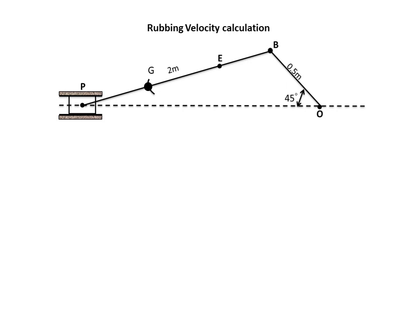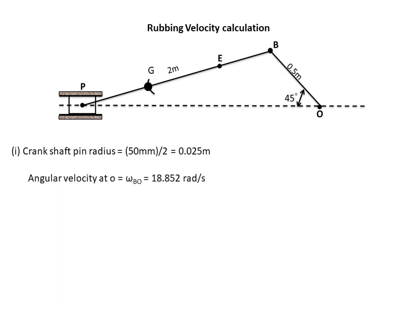The last question is rubbing velocity — the easy part. You must understand the direction and sense of rotation of each link. For the crankshaft pin at O: the crank rotates at 18.852 rad/s; there is only one angular velocity since point O is fixed. Pin diameter is 50 mm, radius is 0.025 m. Rubbing velocity = angular velocity × pin radius = 18.852 × 0.025 = 0.47 m/s. For the crank pin at B: diameter is 60 mm, radius is 0.03 m. Here the crank and connecting rod rotate in opposite senses, so add their angular velocities: 18.852 + 3.4 = 22.252 rad/s. Rubbing velocity = 22.252 × 0.03 = 0.6675 m/s.